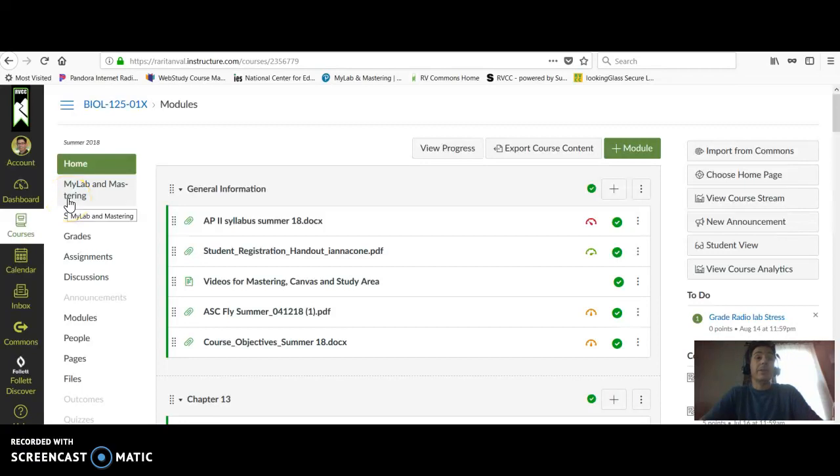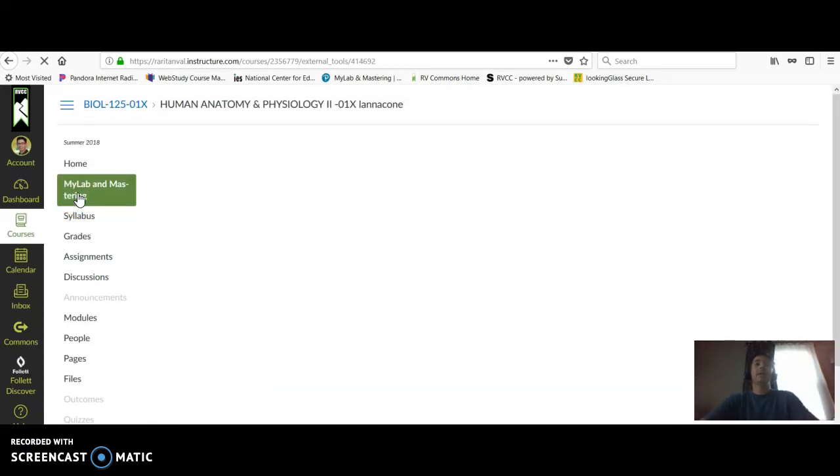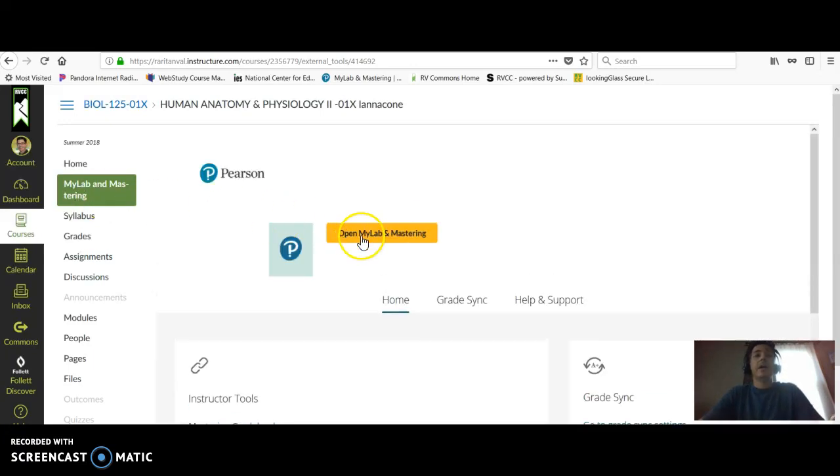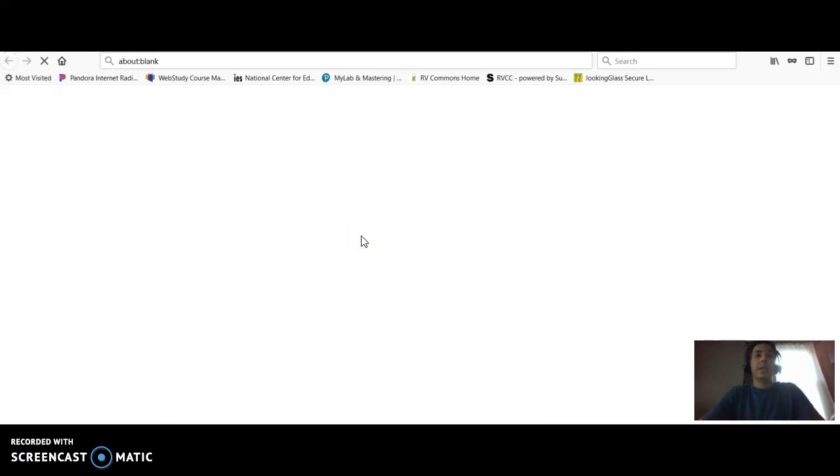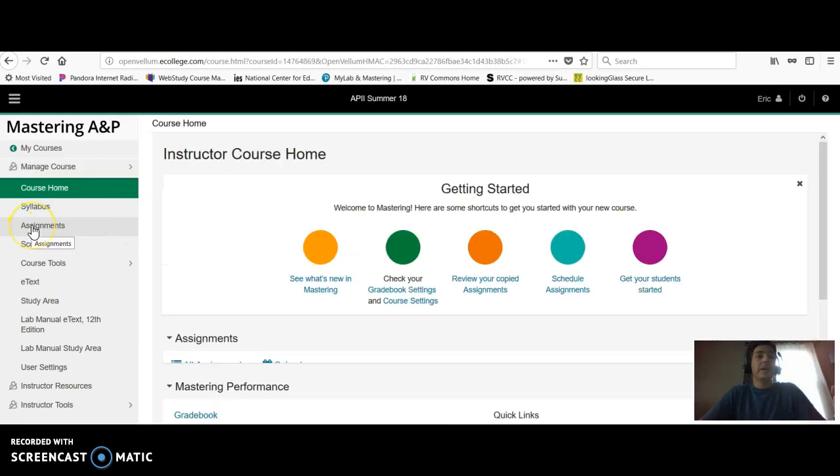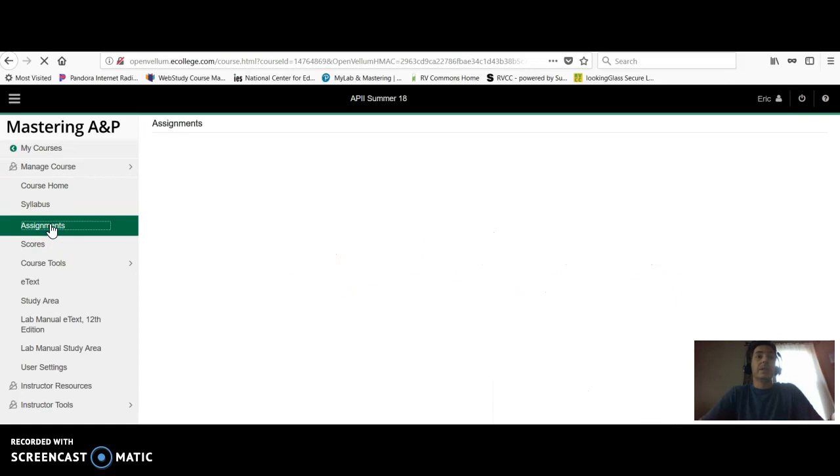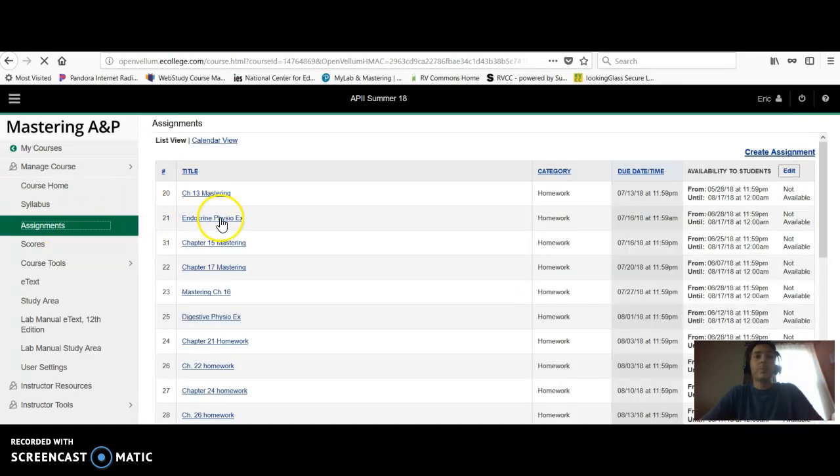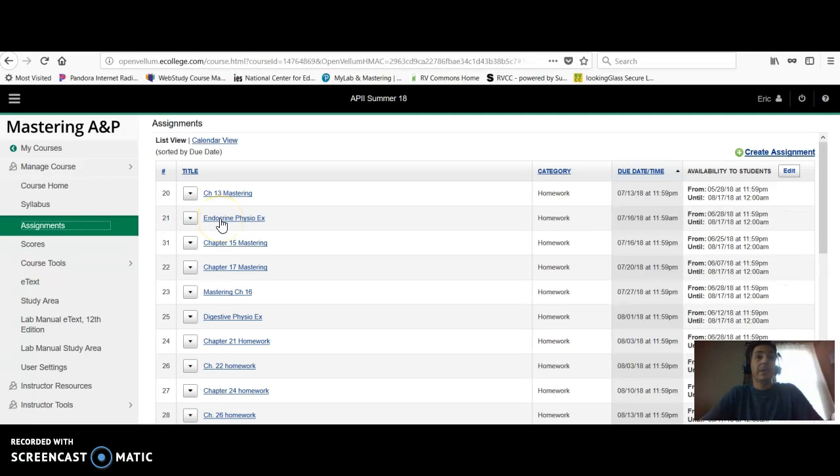I think it'll work better visually if you actually do it in Mastering instead of in the Canvas window. So click on My Lab in Mastering, and then open My Lab in Mastering, then find the Assignments tab right there, click on Assignments, click on Endocrine Physio EX.